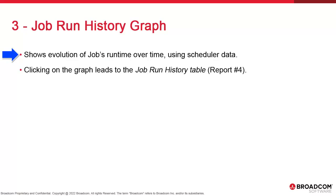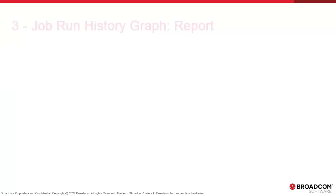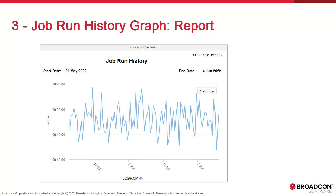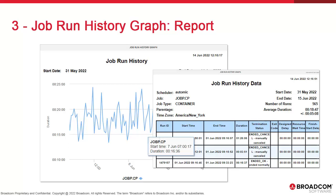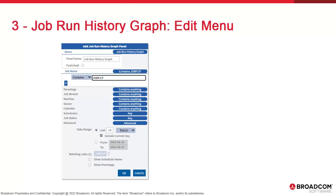The job run history graph is similar, but it plots run times instead of end times. Just like the job end time graph, clicking on each data point provides drill-down functions into the job run history table, which is report number 4. This particular job, jobb.cp, has a run time that ranges from 12 minutes to about 25. When you click each individual point, you display the job run history table with the exact data, type of delay, determination status, and more. The edit menu is the same as the end time graph.